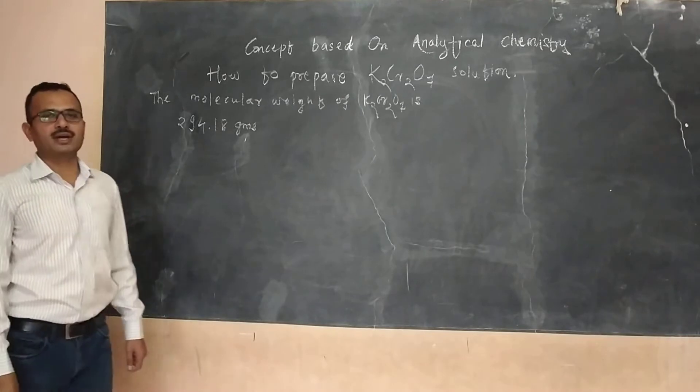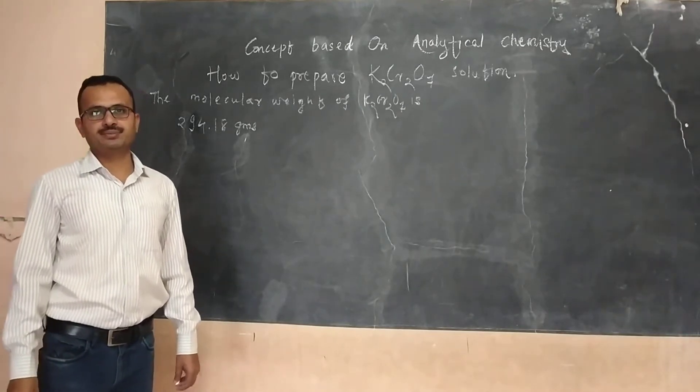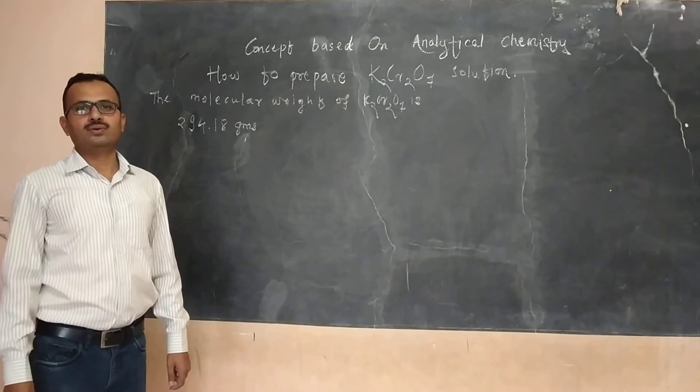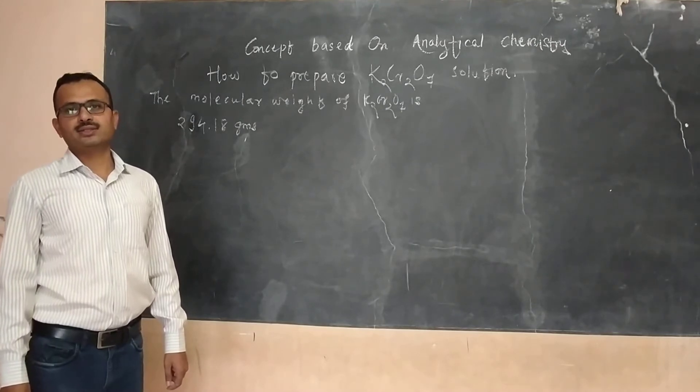The potassium dichromate is oxidizing in nature. It acts as an oxidant.